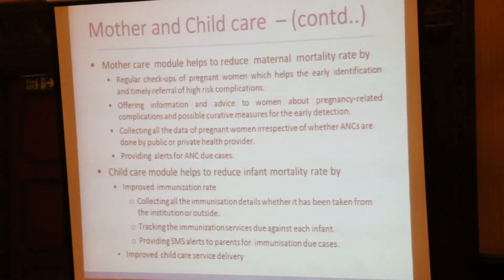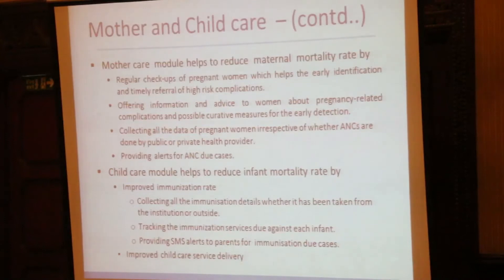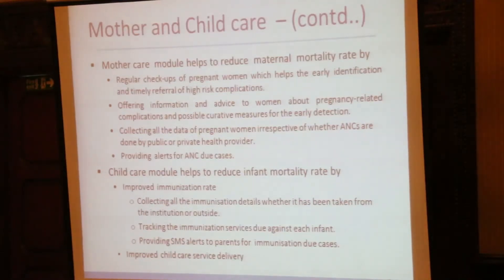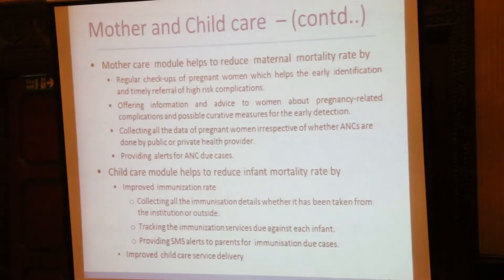This software helps reduce maternal mortality rate through regular checkup of pregnant women, enabling early identification of high-risk cases and providing information and advice about pregnancy-related complications. All antenatal data is collected irrespective of whether the woman attends private or public hospitals. Alerts are provided for any due ANC cases so health workers can take timely action. The child care module helps reduce infant mortality by improving immunization rates — tracking all immunizations from both private and public sources and alerting health workers and parents about due immunizations.